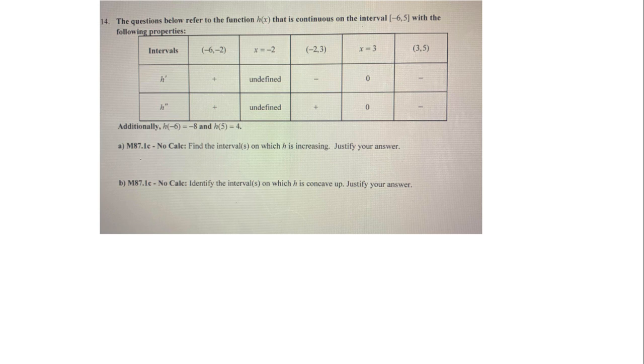h is increasing when h prime is positive. So that is from negative 6 to negative 2, and it's an open interval. At negative 2, it's undefined, so we do not want to include it. And everywhere else, it's either 0 or negative, so we do not want to include those.